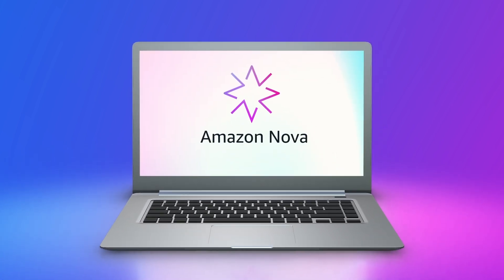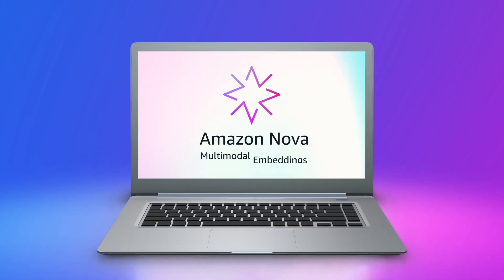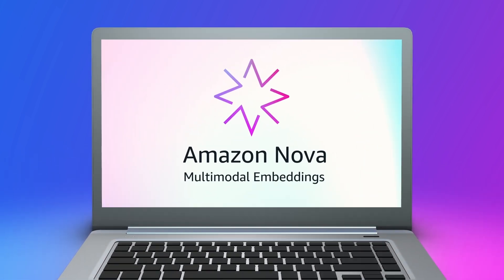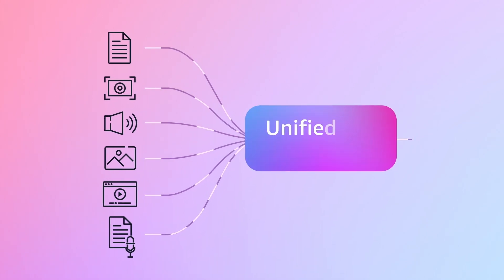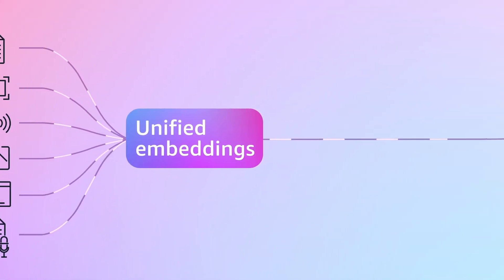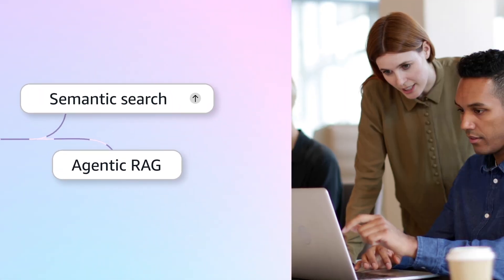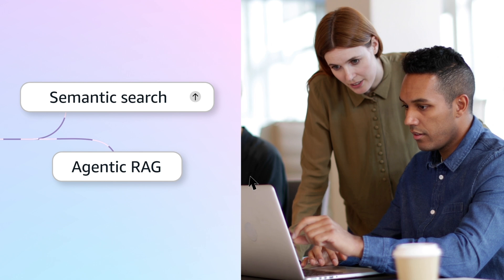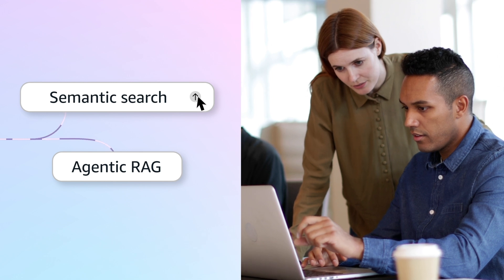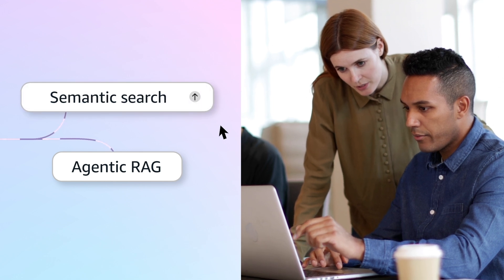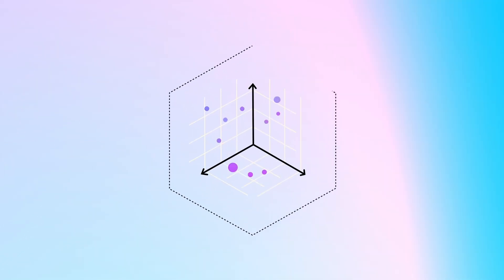Presenting Amazon Nova Multimodal Embeddings — a state-of-the-art model that can convert enterprise content into unified embeddings, a format AI can understand to power semantic search and agentic RAG.